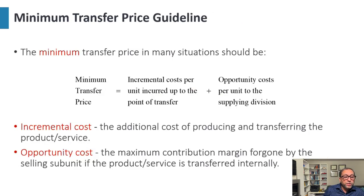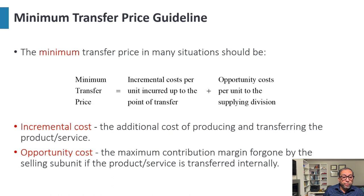Regarding minimum transfer price guidelines: the minimum transfer price in many situations should equal the incremental cost per unit incurred up to the point of transfer plus the opportunity cost per unit to the supplying division. The incremental cost is the additional cost of producing and transferring the product or service, and the opportunity cost is the maximum contribution margin foregone by the selling subunit if the product is transferred internally.